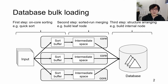Database bulk loading is a process of inserting a bunch of record contents into a database stored in secondary storage. This is usually composed of multiple steps. In this figure, the database bulk loading consists of three steps. Let's assume that the target data is stored as a text file in a file system. The first step reads a block from a given text file into a sort buffer, interprets and sorts records in the block, and stores the block into intermediate space.